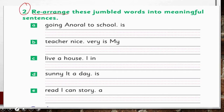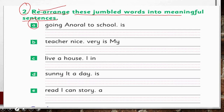Question number two: Rearrange these jumbled words into meaningful sentences. In jumbled words ko aage peeche karke alfaaz ki tarteeb badli gayi hai. Aapne unko rearrange — yani unko dobara se tarteeb deni hai. Hamesha yaad rakhiye ke English language mein har sentence capital letter se shuru hota hai aur full stop pe end hota hai.